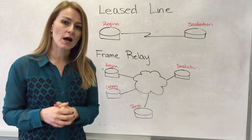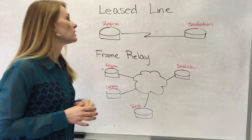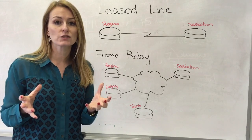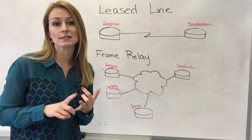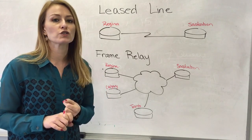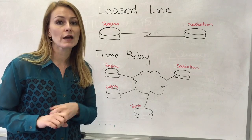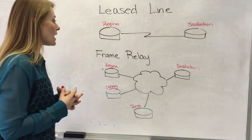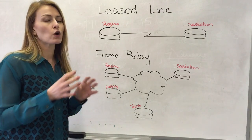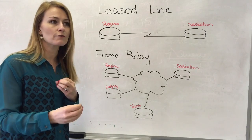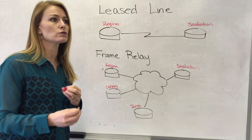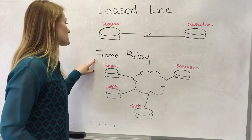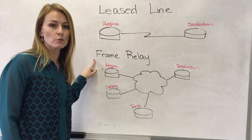So there are other options available other than a lease line connection. You've got broadband services like DSL or a cable modem. You've also got Ethernet over fiber optics available now. And another older technology that's kind of on its way out, although it used to be very common and very popular, is something called Frame Relay.